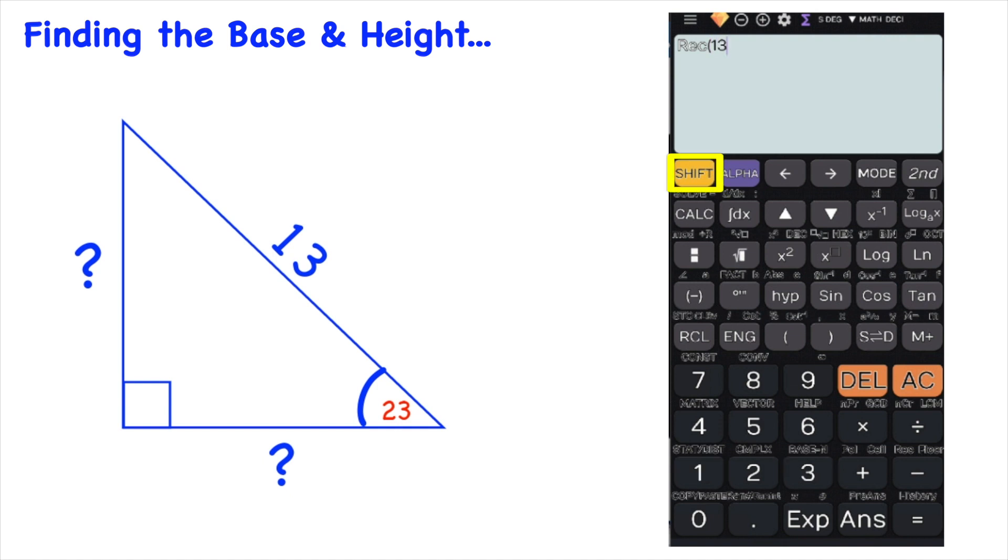So we put in 13 comma shift in close bracket followed by the angle and as you can see we have the base as 11.966 which is roughly 11.97 units and the height is 5.079 units.